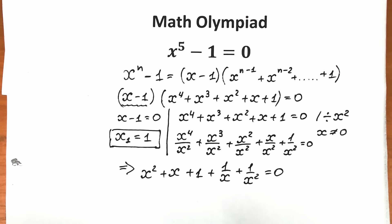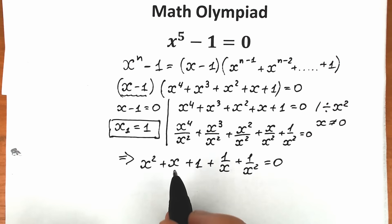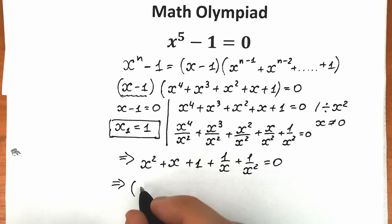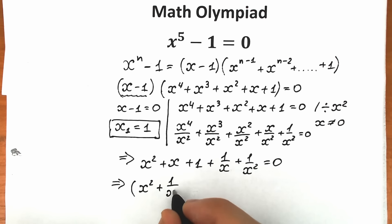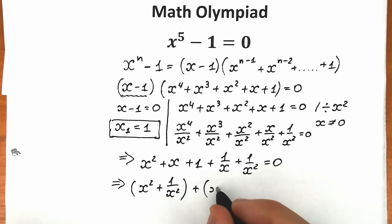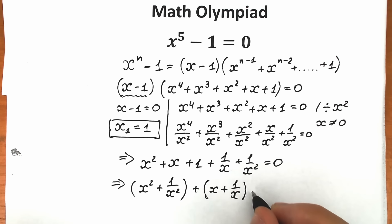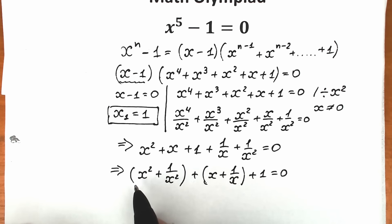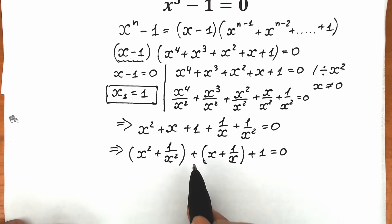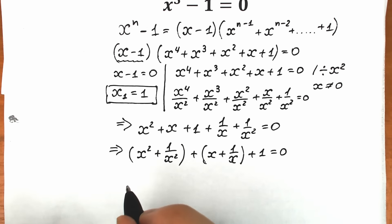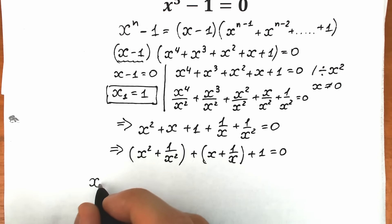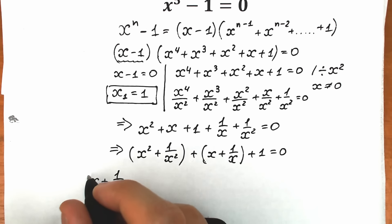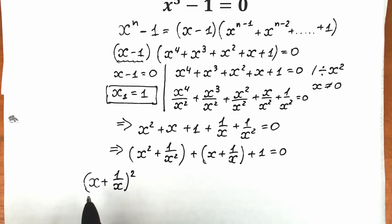Now let's group our expression. Let's group x squared with one over x squared, and group x with one over x. So we get: x squared plus one over x squared, plus x plus one over x, plus one, equals zero. This is the most common mistake — a lot of students think that x squared plus one over x squared is simply the square of x plus one over x, but it doesn't work like that. Let me show you the right trick.